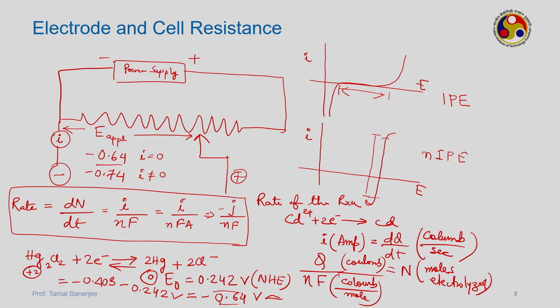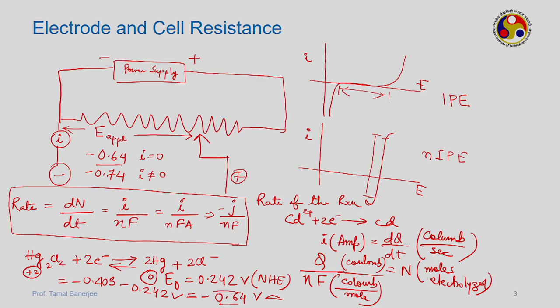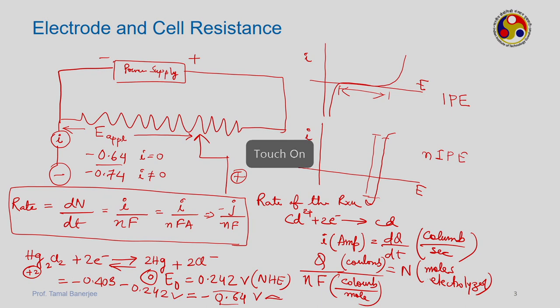The Faradaic current is Q/(nF), and rate equals total Faradaic current divided by nFA. N is the number of equivalents, F is Faraday's constant, A is area. For double layer charging current, capacitance is Q/E, and the double layer charging current is C·A (capacitance of double layer times area). The total current of any electrochemical cell is the sum of the Faradaic current and the double layer current.